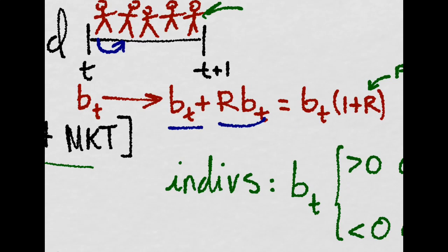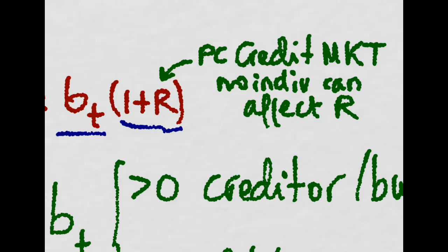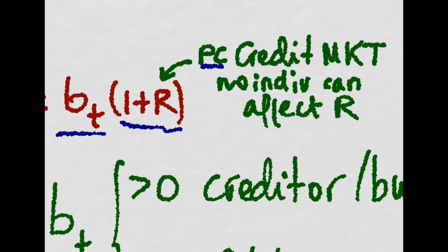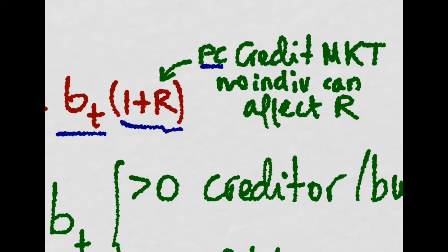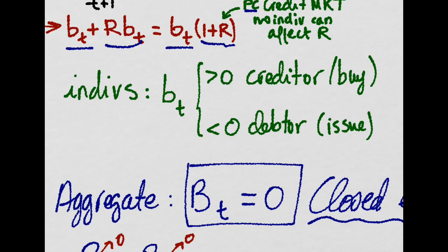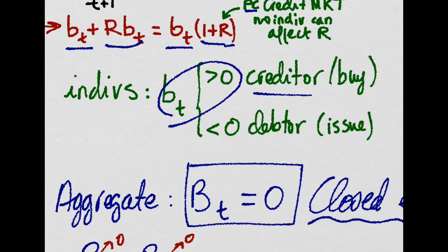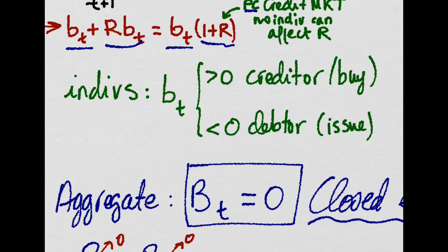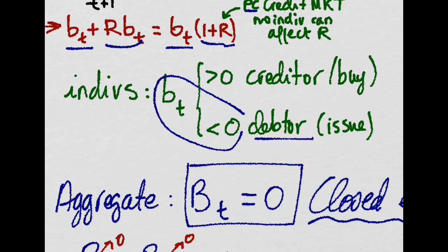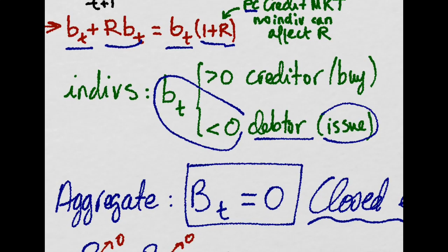meaning he will get back B times one plus the interest rate. We are assuming that we have a perfectly competitive credit market, so no individual alone can affect the interest rate. If one individual holds a positive stock of bonds, that means he is a creditor. He is buying bonds. But if he has a negative position, that means he is a debtor and that he is issuing bonds to borrow.